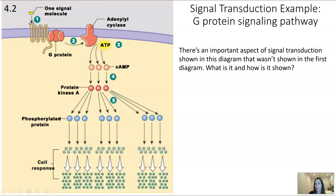Here is an example of a signal transduction pathway — specifically a G protein signaling pathway. G protein signaling is a very common type of signal transduction. There's something really important shown here that was not shown in the first diagram: amplification. Amplification is where one molecule can trigger many, many more molecules downstream.